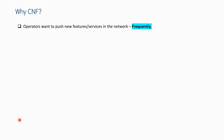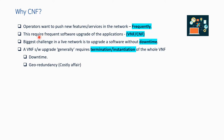Let me dig into these points in detail. The main point listed here is that operators want to push new features or services in the network more frequently. Notice the highlighted words — features and services were required in earlier generations also, but now they are required more frequently. To achieve this, it requires frequent software upgrades of applications, whether VNF or CNF. If you want to push new features or services frequently, you have to upgrade the software of your applications. The biggest challenge in a live network is to upgrade software without downtime.